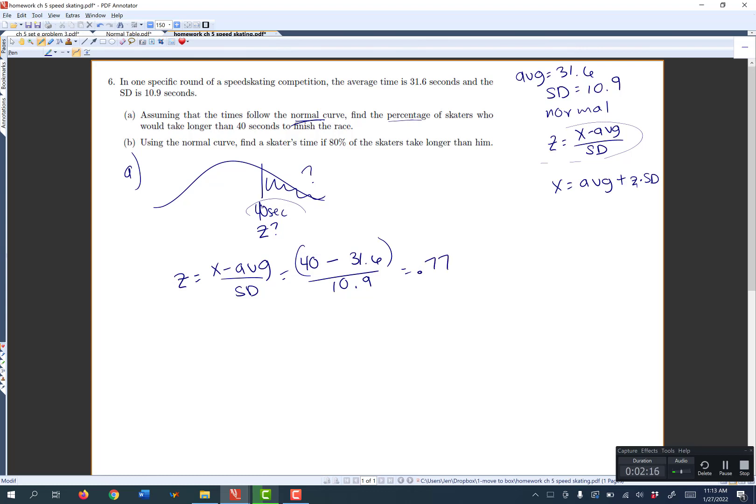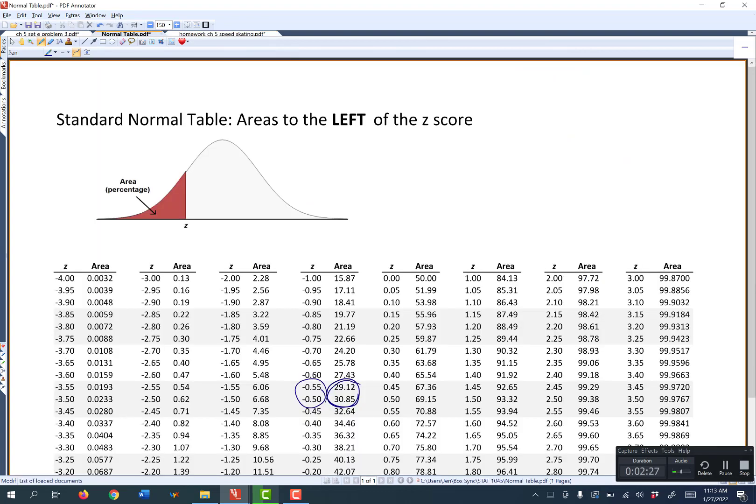So that's my z value. So now I know that my curve looks like this with z equals 0.77 and I'm still looking for the area to the right. Now if I go to my table and I look up 0.77, looks like I'm somewhere between this 0.75 and 0.80. Sorry.